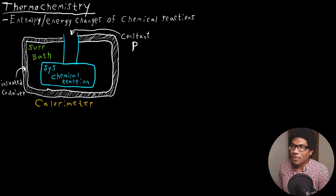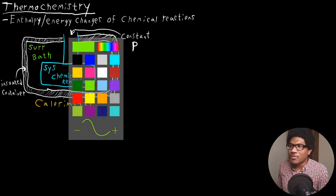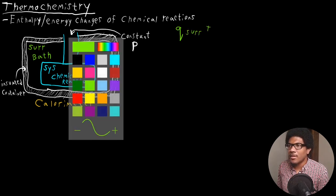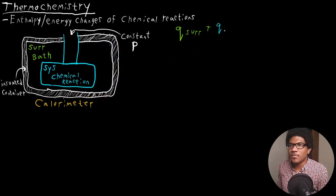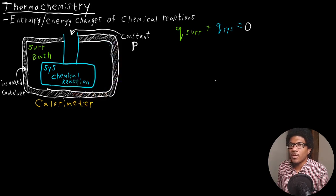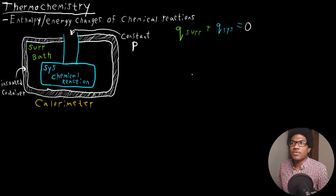This calorimeter has some sort of outside insulated container such that the heat transfer follows the first law of thermodynamics, where the Q of the surroundings plus the heat transfer of the system must be equal to zero. That sets up the interplay where whatever heat is transferred into the system must be the negative of whatever heat is transferred from the surroundings.